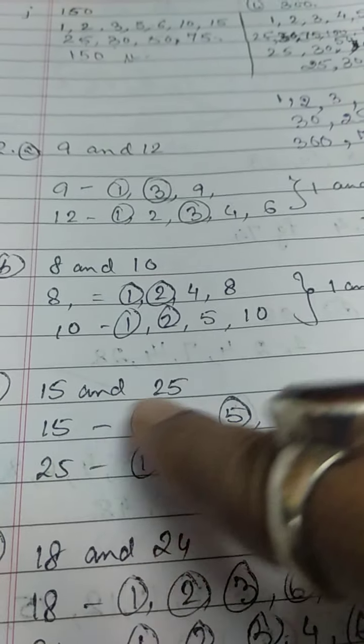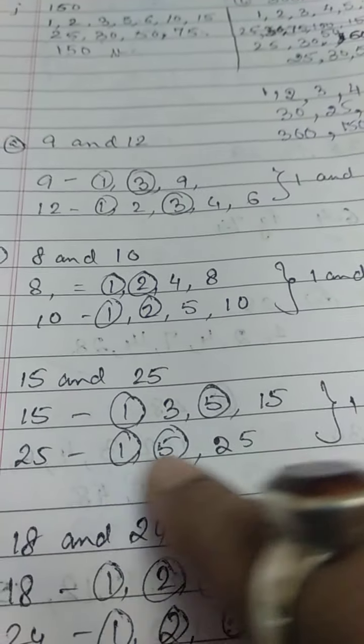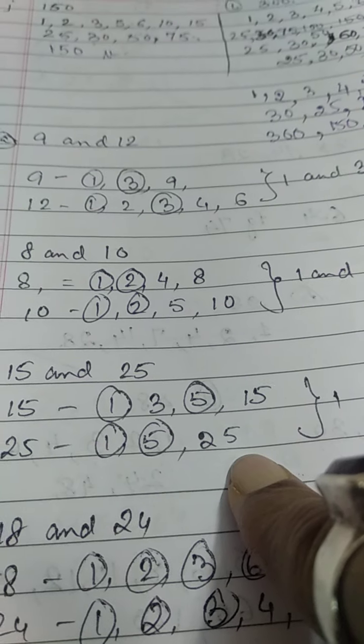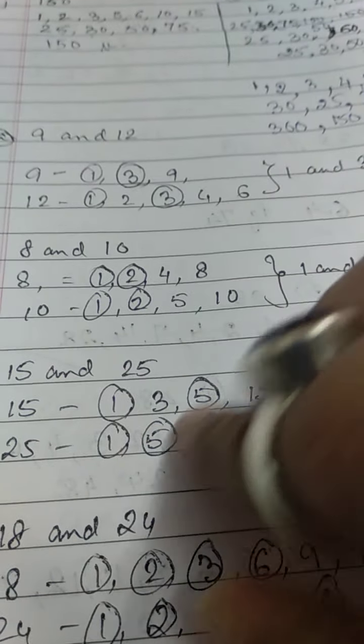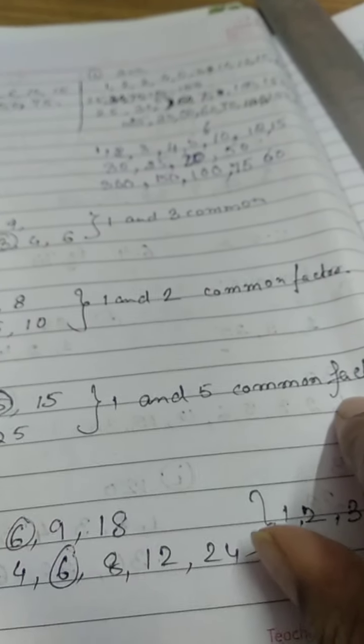Next, 15 and 25. For 15: 1, 3, 5, 15. For 25: 1, 5, 25. Common is 1 and 5. So the answer will be 1 and 5 as common factors.